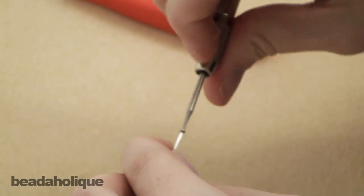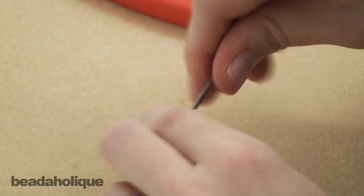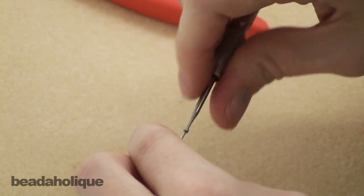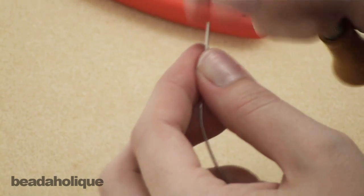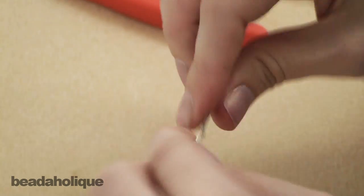That is all there is to it. You can do this for your earring hooks or a hook and eye, anything that you want to do to make sure that your tip of your wire is nice and smooth.